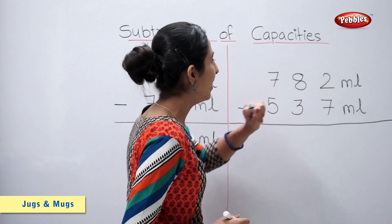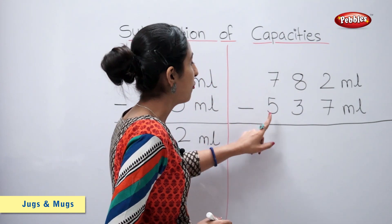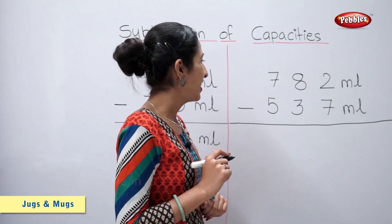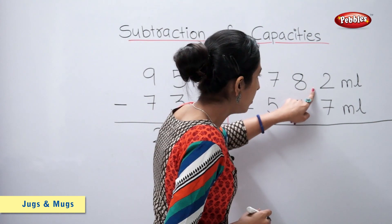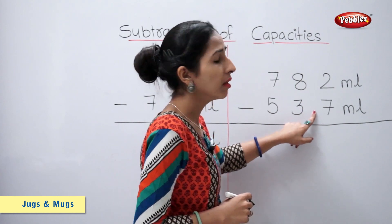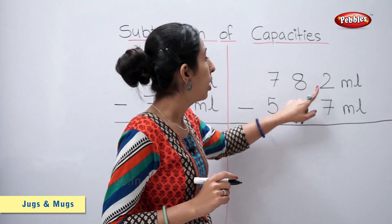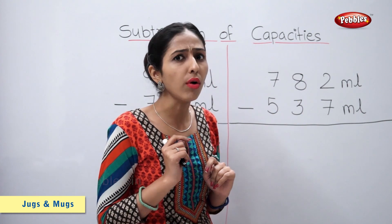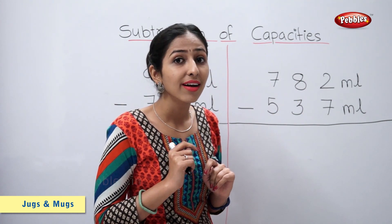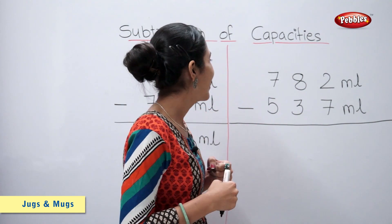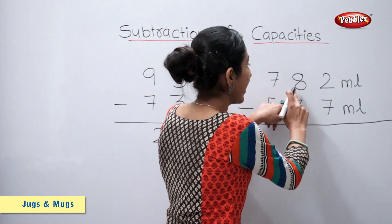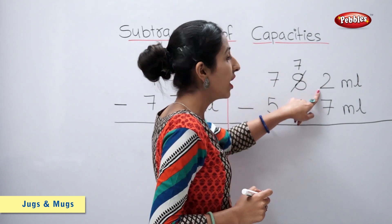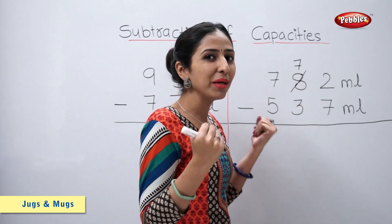782 ml minus 537 ml. Let's find out. 2 minus 7 — but students, 2 minus 7 is not possible. So let's borrow. 8 becomes 7, and 2 becomes 12.